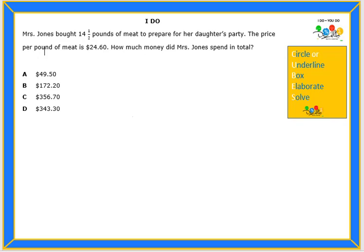Let's start by reading the I Do problem. Mrs. Jones bought 14.5 pounds of meat to prepare for her daughter's party. The price per pound of meat is $24.60. How much money did Mrs. Jones spend in total?